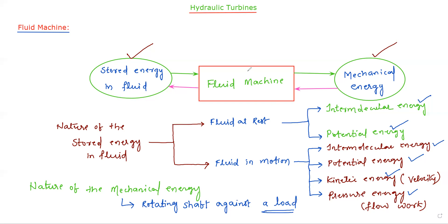So this is the small discussion on fluid machines. The fluid machine can convert stored energy in fluid into mechanical energy, and also converts mechanical energy into stored energy in fluid. Now let us have a discussion on the classification of fluid machines, after which we will continue with hydraulic turbines.